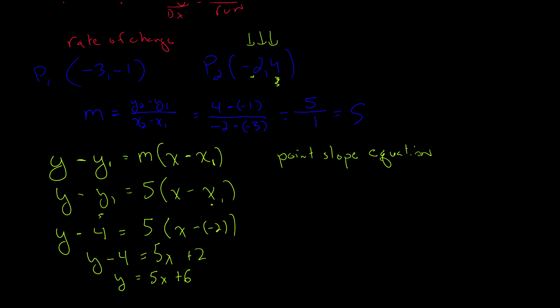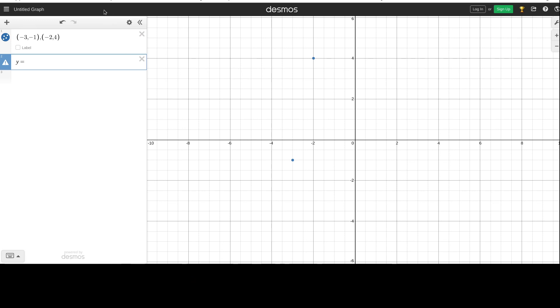I noticed I had a distribution error — I forgot to distribute the 5. So 5 times x is 5x and 5 times 2 is 10, then bringing the 4 over gives 5x plus 14. In Desmos: y equals 5x plus 14, and it goes through those two points. Notice that 14 is the y-intercept.